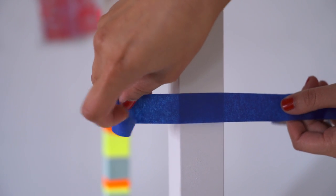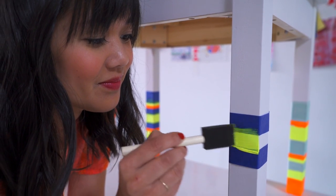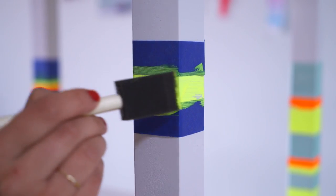Next, use painter's tape to create stripes on the table and chair legs. You can also freehand it if you want. Then paint the stripes with your desired colors.